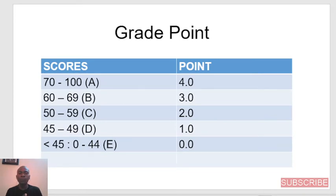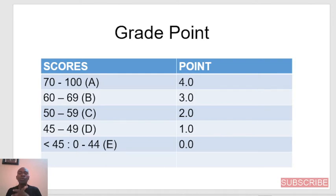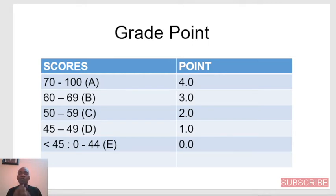If you're making use of the 4.0 scale: if you scored between 70 to 100%, the grade is an A and you have 4 points. If you score 60 to 69, your grade is B and your grade point is 3.0. If you scored between 50 to 59%, that's a C and you have 2 points. If you score between 45 to 49%, that's D and you have 1 point. But if you score below 45 — that's between 0 to 44 — that's an E and that's 0 points. So it means the least score you're expected to have is 0.